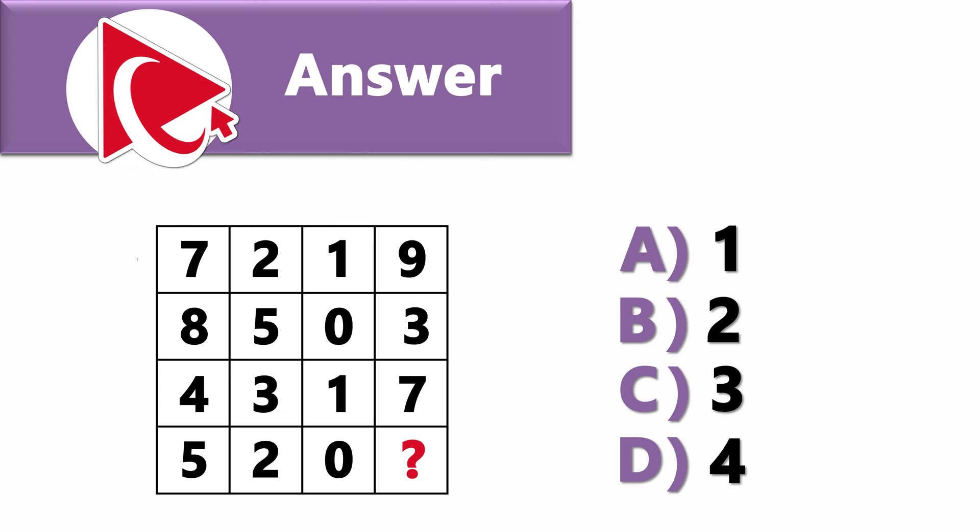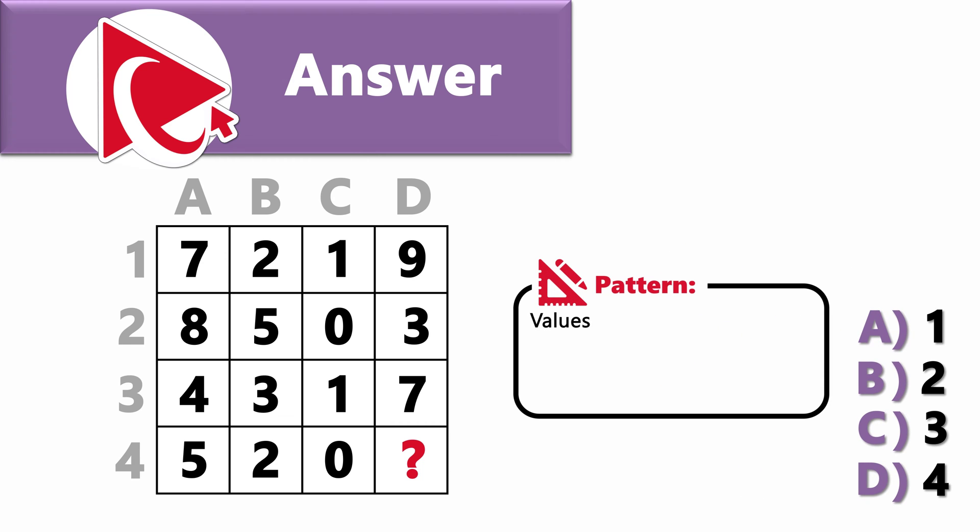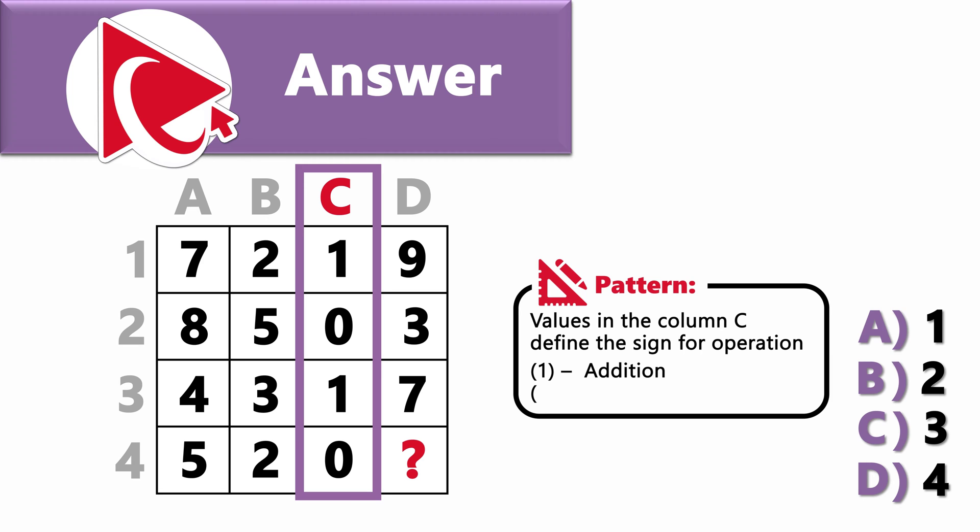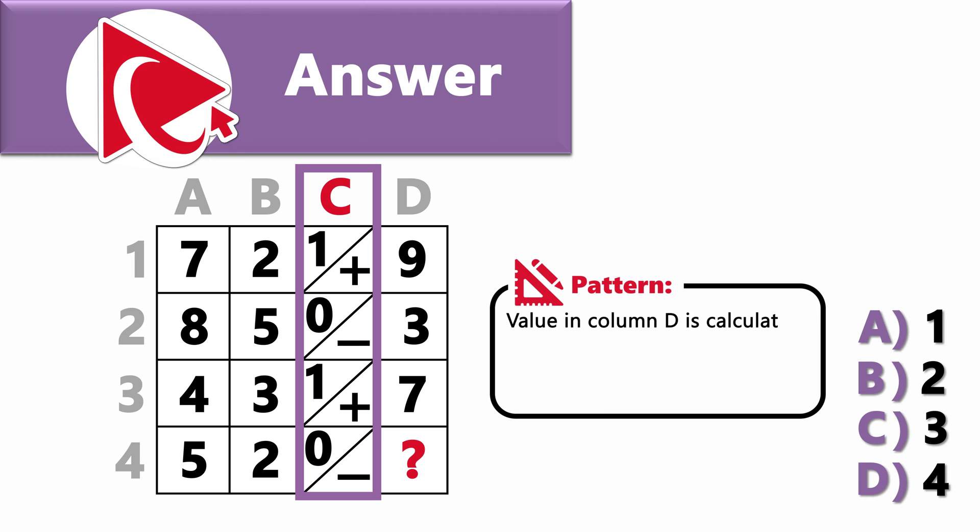Let's number rows as 1, 2, 3, and 4, and let's number the columns as A, B, C, and D. What's unusual about this puzzle is that values in column C define the sign for math operation. The value 1 is equivalent of addition, and value 0 is an equivalent of subtraction. Once you know this rule, you can calculate the value in column D based on the math operations to the values in columns A and B.